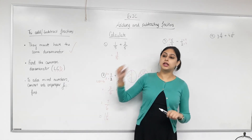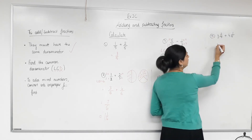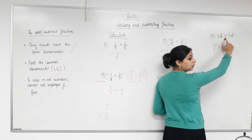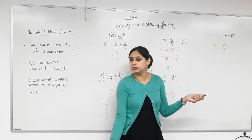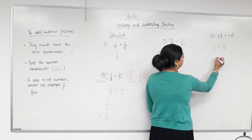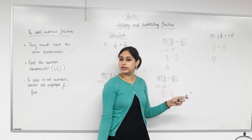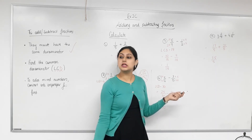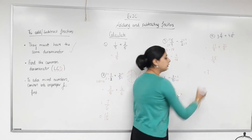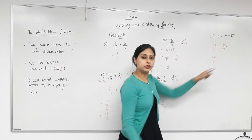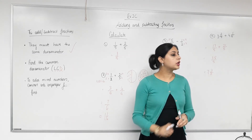For mixed numbers, first convert them into improper fractions, then follow the usual steps. For example: five times three plus two gives seventeen, and five times four plus one gives twenty-one. Are the denominators the same? Yes — so we can add the tops. Check if the fraction can be simplified. Can it be converted to a mixed number? Yes: five goes into thirty-eight seven times (five times seven is thirty-five), with a remainder of three. The answer is seven and three-fifths.